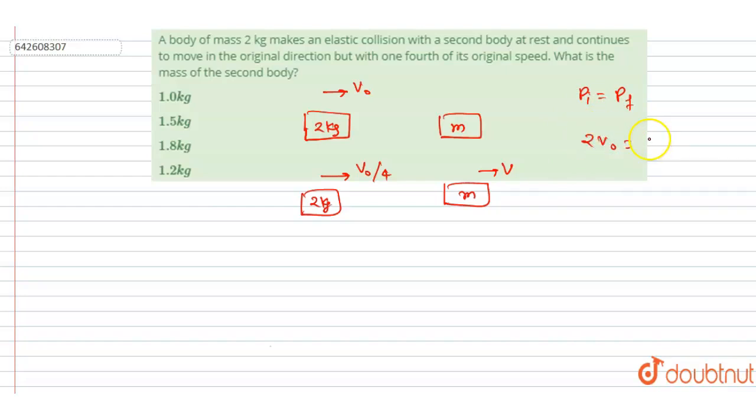is equal to 2v_naught/4 + mv. So from here I will get... this will get cancelled out by 2, so from here